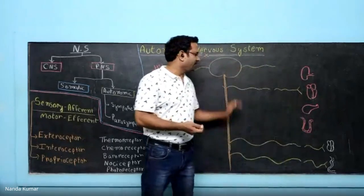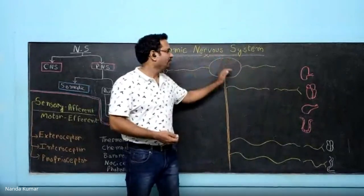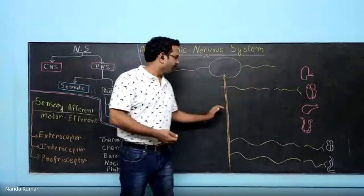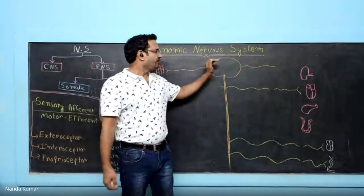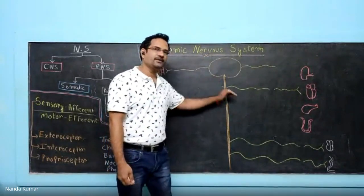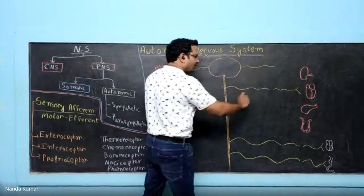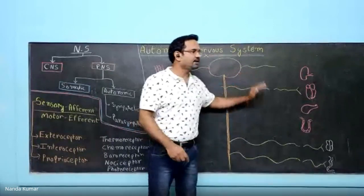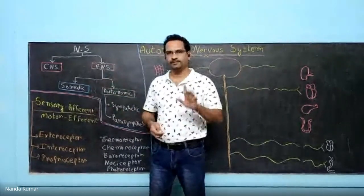From the brain and spinal cord, a lot of nerves come out. From the brain, the nerves are known as cranial nerves. From the spine, they are known as spinal nerves. We have 12 pairs of cranial nerves and 31 pairs of spinal nerves. These nerves come peripheral to the central part, hence cranial and spinal nerves are considered the peripheral nervous system.